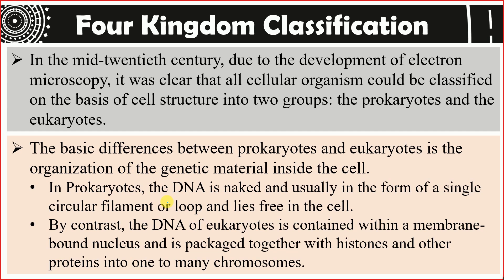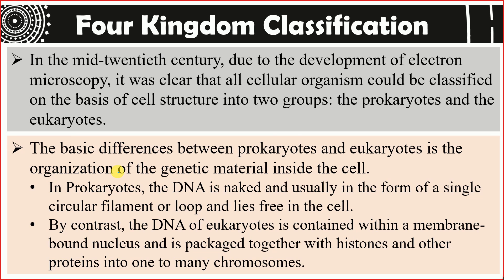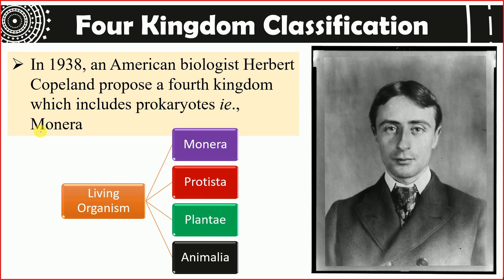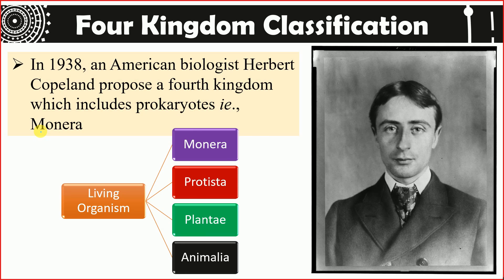These are the main differentiating points between prokaryotic and eukaryotic cells. Organisms that contain prokaryotic cells are known as prokaryotes, and organisms that contain eukaryotic cells are known as eukaryotes.